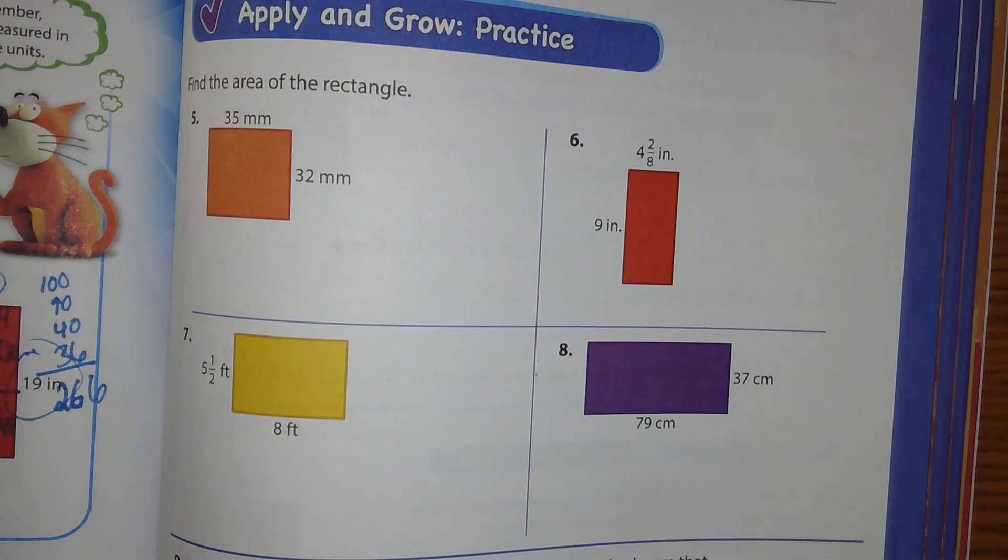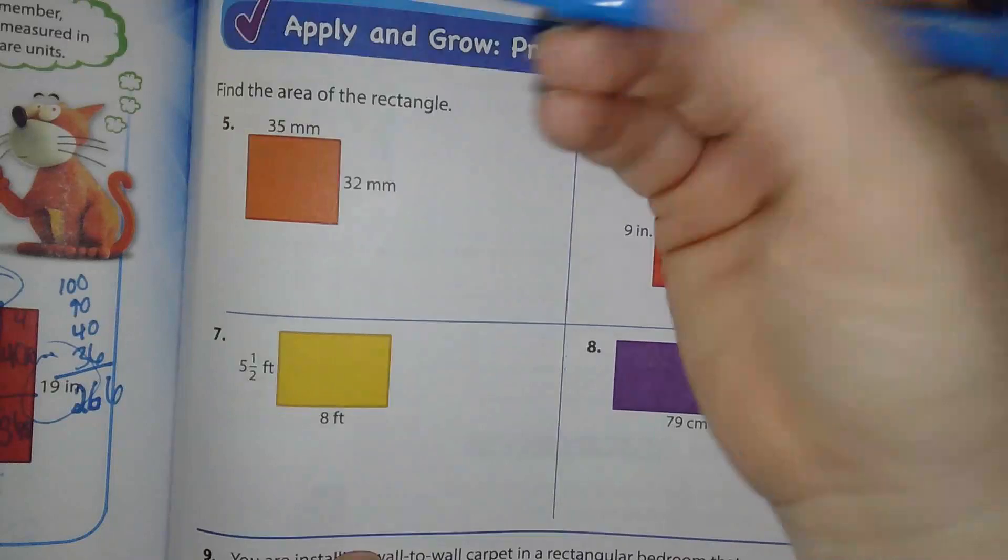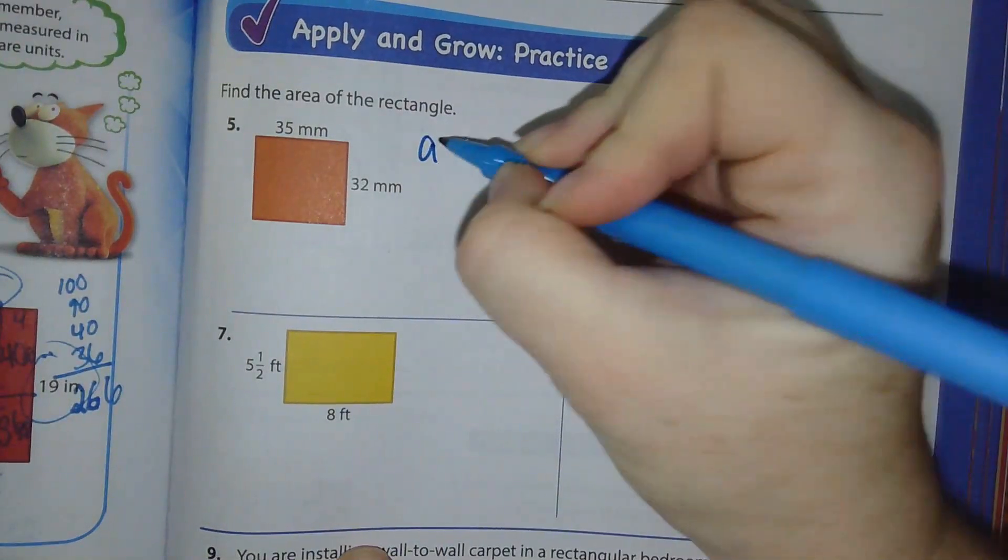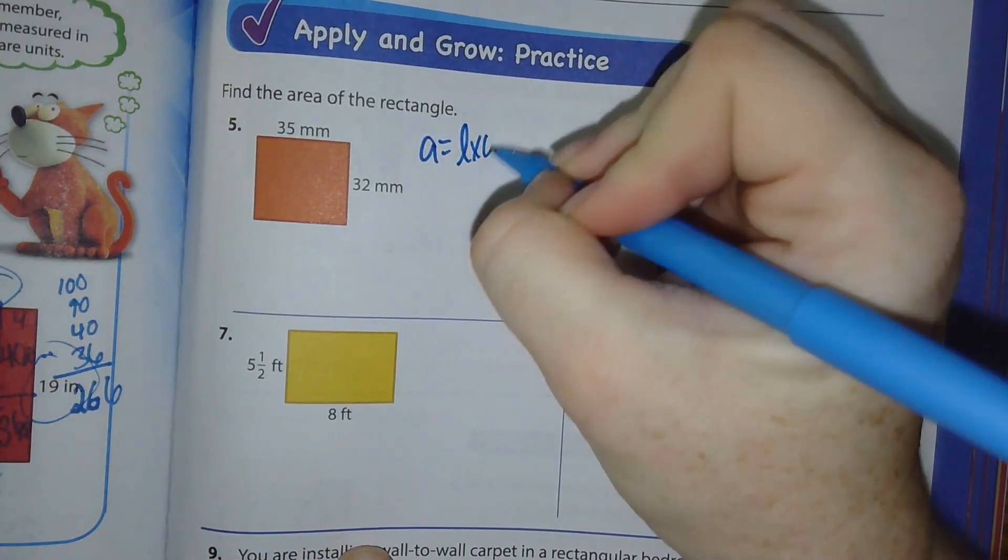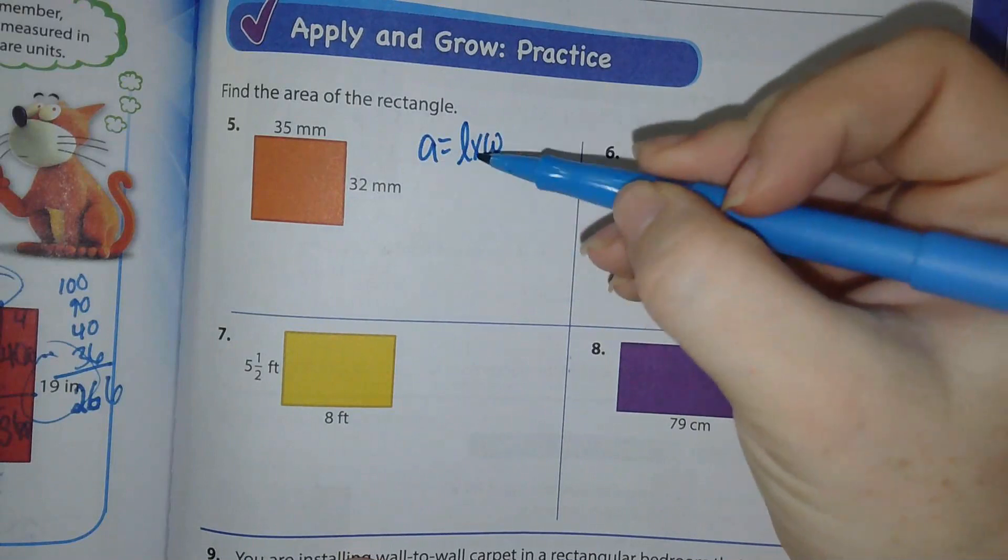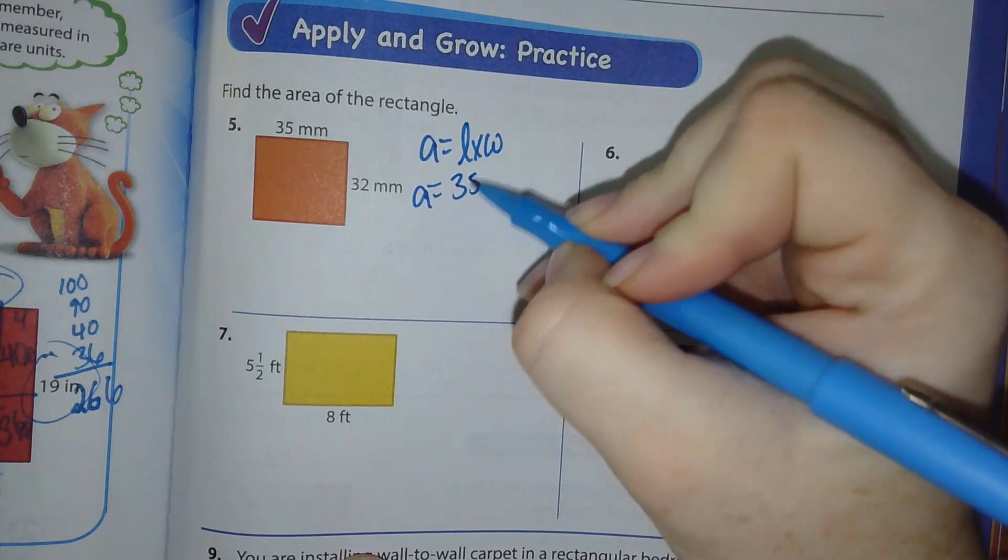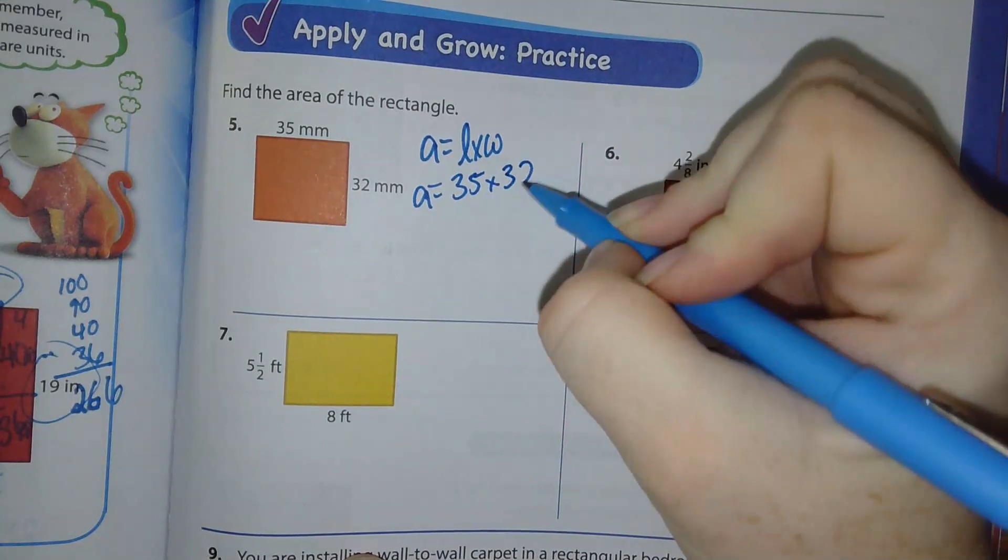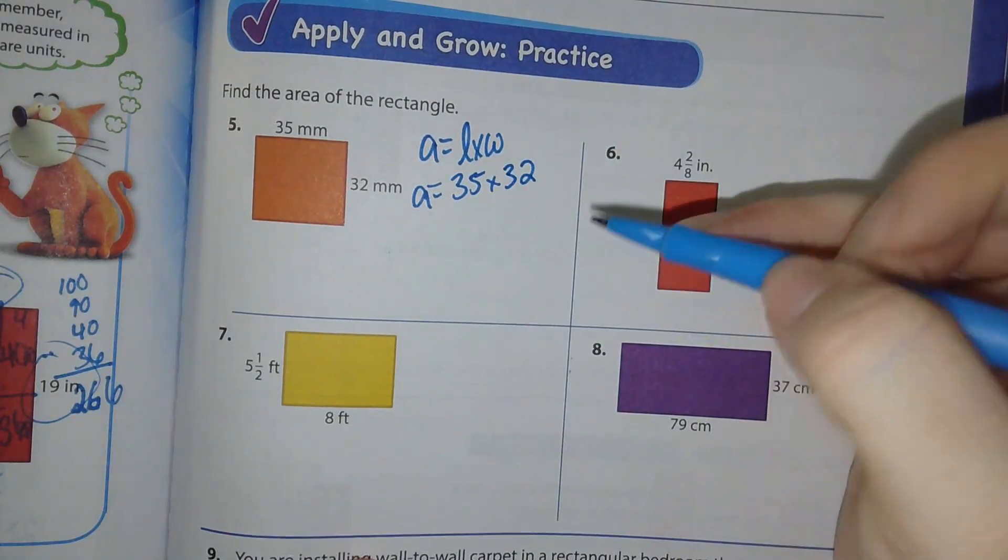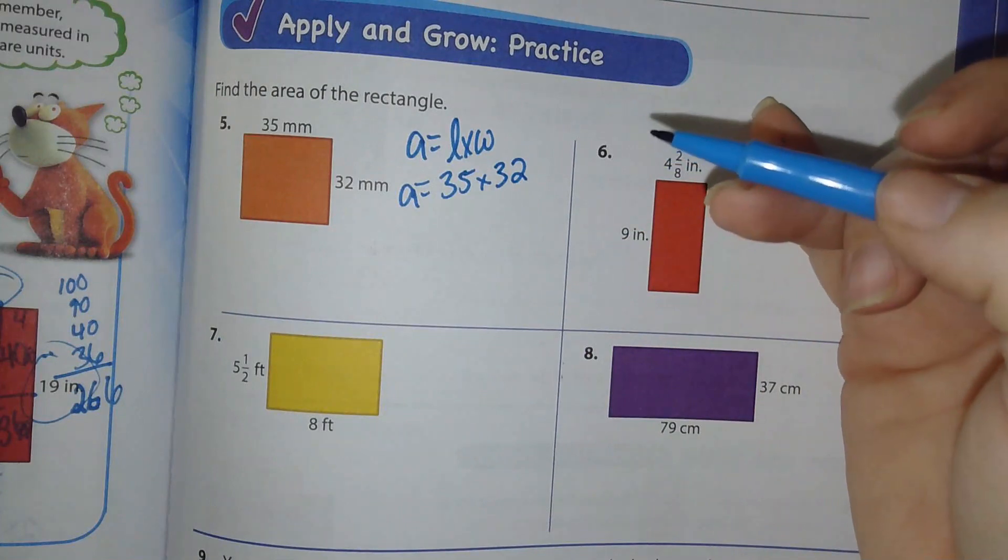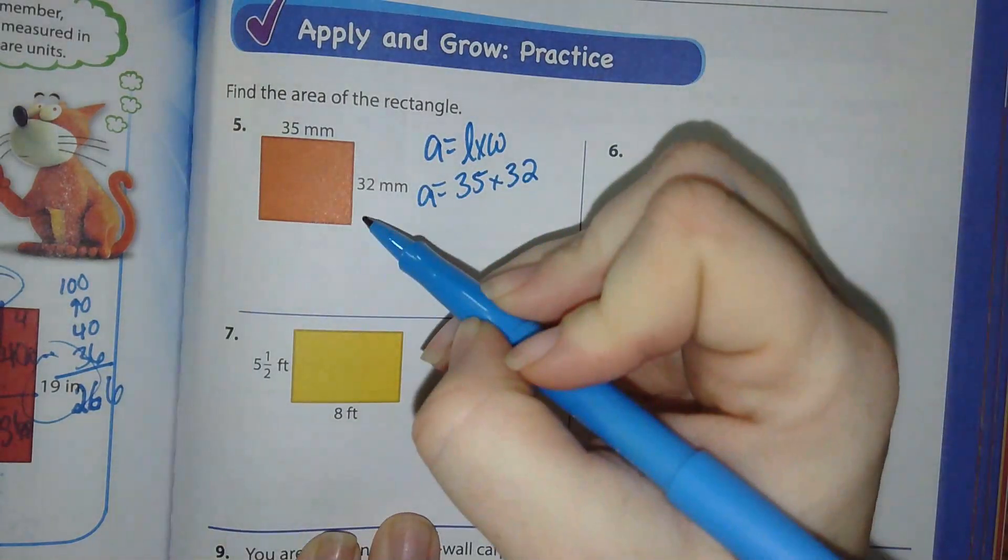Let's look at number 5. It says find the area of the rectangle. The first thing you should have done is written A equals L times W. Because area equals length times width. Then you're going to write A equals 35 times 32. We're going to multiply that out. We're going to do it where we line up our numbers.